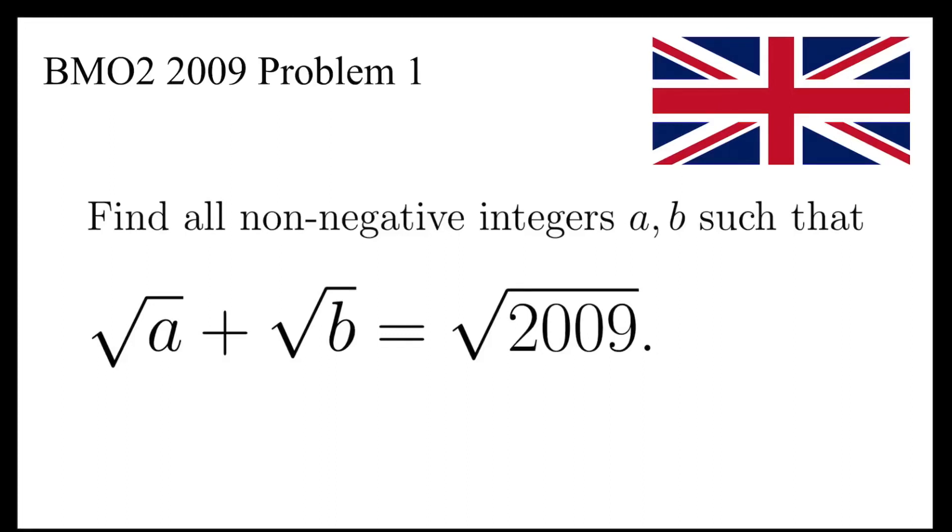In this video, I'm going to find all the non-negative integers a and b such that the square root of a plus the square root of b equals the square root of 2009.